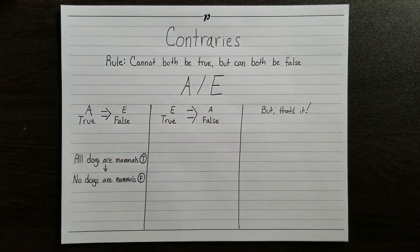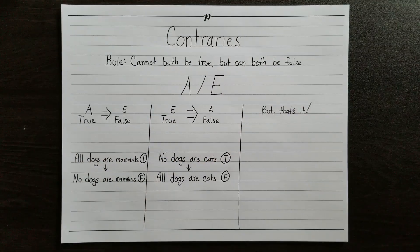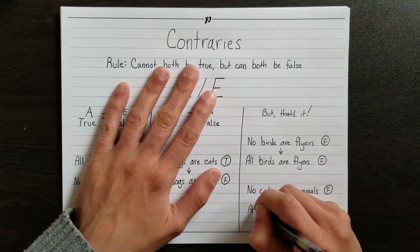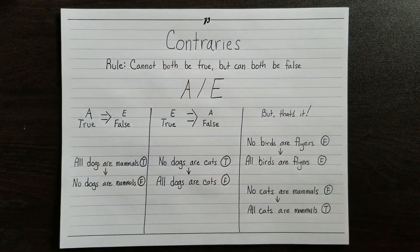If we know that all dogs are mammals, then we know that it cannot be true that no dogs are mammals — so the A-type being true guarantees that the E-type is false. If we know that no dogs are cats, then we know it can't be the case that all dogs are cats, so the E-type being true guarantees that the A-type is false. But if all we know is that a statement is false, we can't infer anything about its counterpart. Knowing that no birds can fly does not guarantee anything about whether all birds can fly.